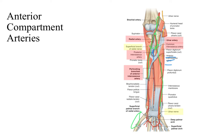There are also perforating branches of the interosseous artery that go through the interosseous membrane and supply the deep muscles of the posterior compartment of the forearm with blood.